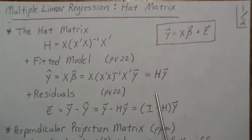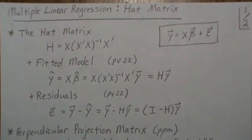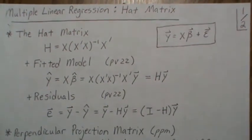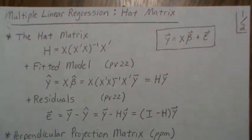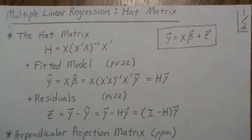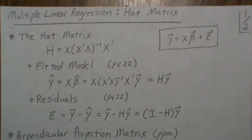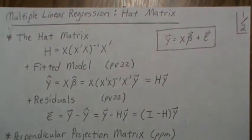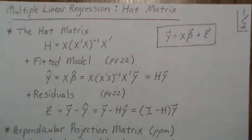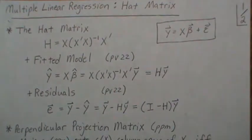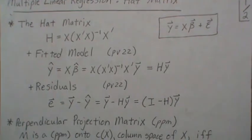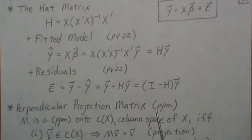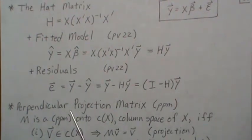The hat matrix h and i minus h are what's called perpendicular projection matrices. To really get a full understanding of multiple linear regression, I think the best way to think about it is from a perpendicular projection matrix standpoint, and that's how these videos are going to be from here on for multiple linear regression. It's not required to have this train of thought — some of the best books on multiple linear regression do not teach it from this perspective — but I love it.